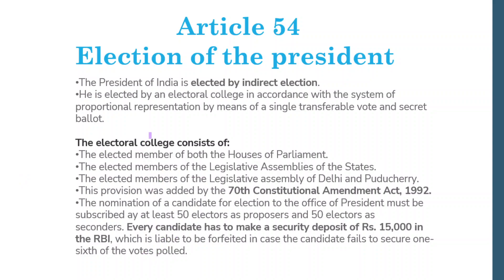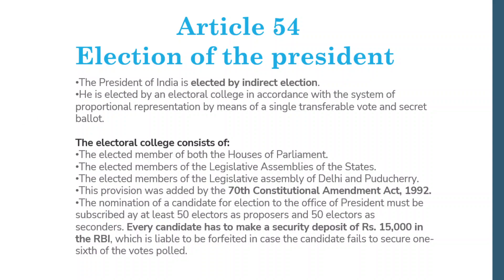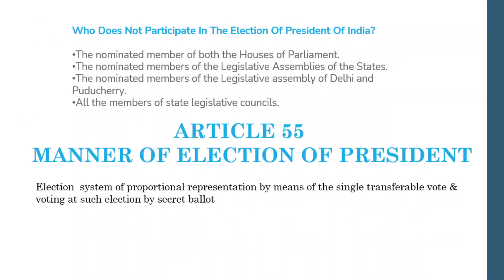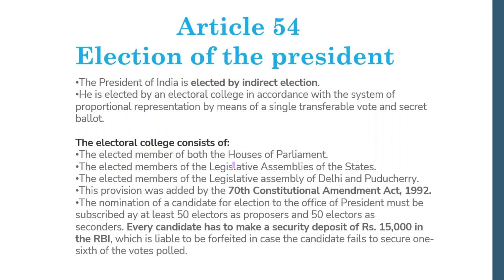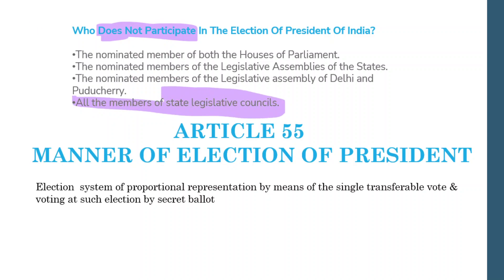Remember that only elected members participate in the Electoral College. Who cannot participate? The nominated members of both Houses of Parliament, the nominated members of the Legislative Assemblies of the states, and the nominated members of the Legislative Assemblies of Delhi and Puducherry cannot vote. Also, all members of the State Legislative Council cannot vote — this question has been asked several times.